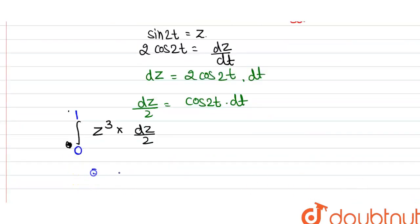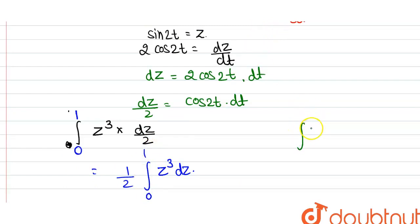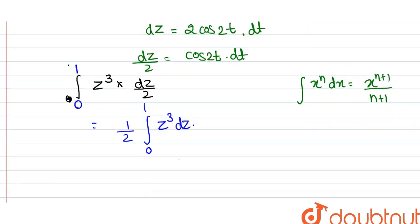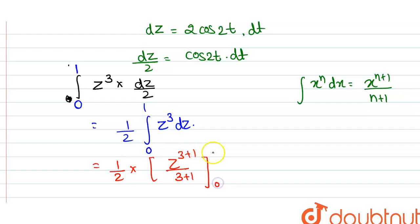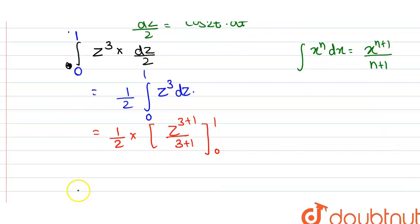Now solve the integral. We get (1/2)∫₀¹ z³ dz. Using the formula ∫xⁿ dx = xⁿ⁺¹/(n+1), the integration of z³ gives z⁴/4, evaluated from 0 to 1. So we have (1/2) · [z⁴/4] from 0 to 1.